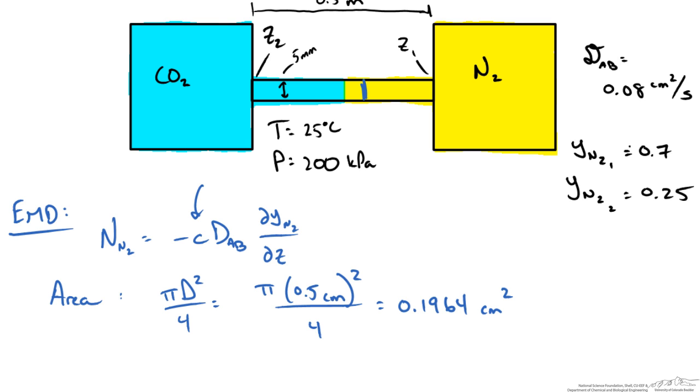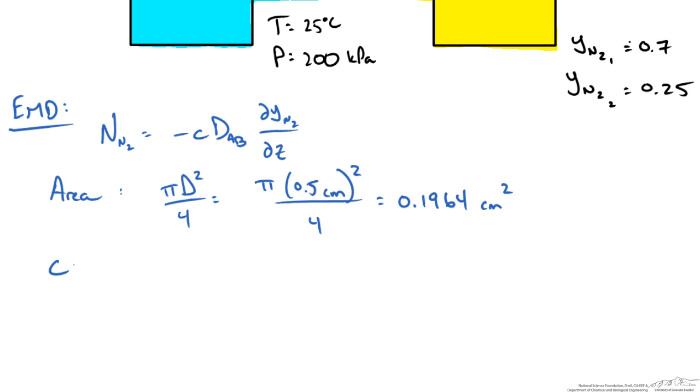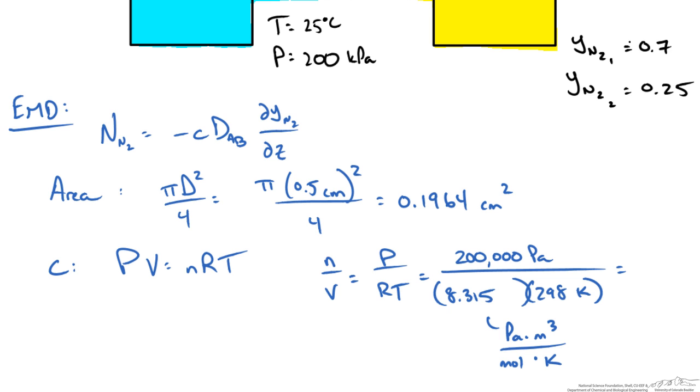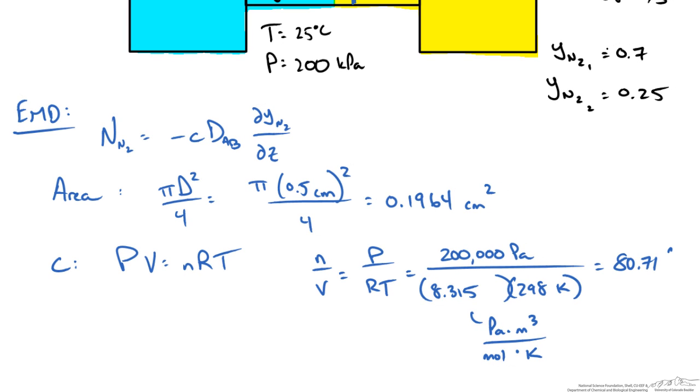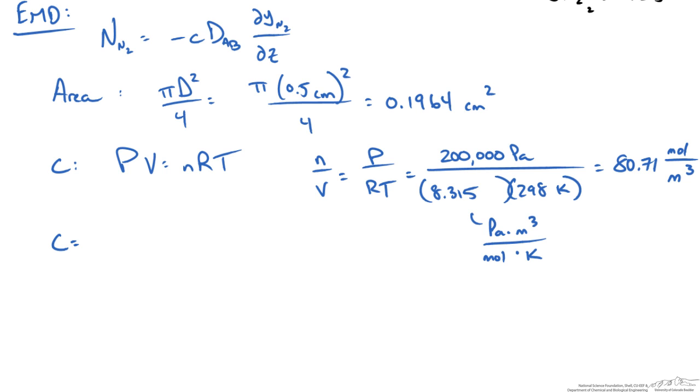We also need our total concentration of our gas. Using our assumption of ideal gas, our concentration c, we can figure out from the ideal gas law pv equals nRT. In this case we are looking for n over v, this is going to be equal to p over RT. This is going to give me 80.71 mole per meter cubed. When we convert into centimeters cubed I get that our concentration is 8.0714 times 10 to the minus 5 mole per centimeter cubed.